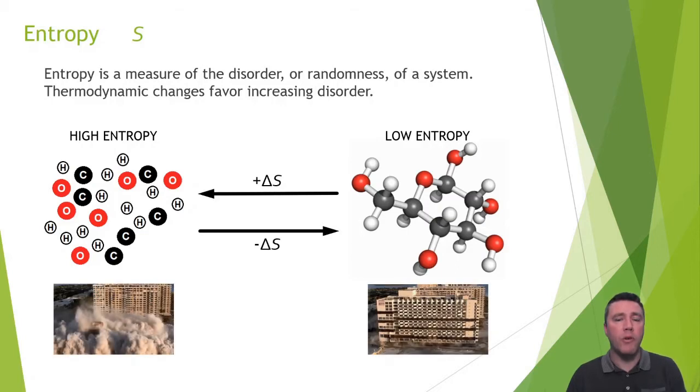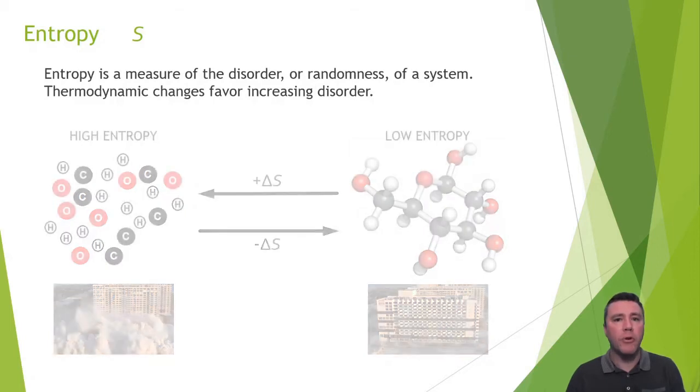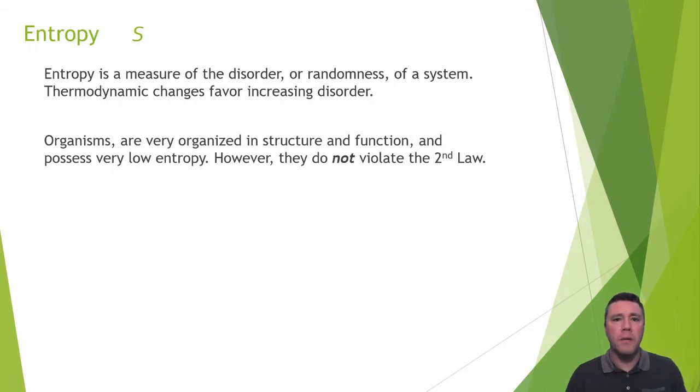If you consider what would have been involved in precisely arranging each of those atoms to form glucose, or all of the construction materials like the metal and concrete and plumbing and electrical wiring to build that building, why the universal trend towards randomness and disorder as stated in the second law of thermodynamics exists should be apparent. The lower energy pile of atoms and lower energy pile of rubble represents favored states. If we would consider a glucose molecule as having relatively low entropy, what about an entire organism?